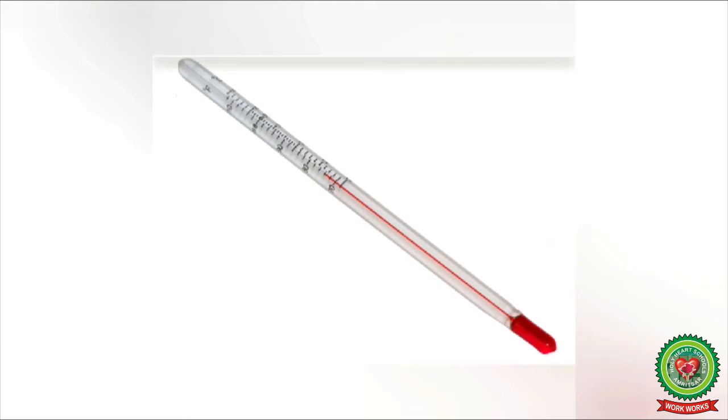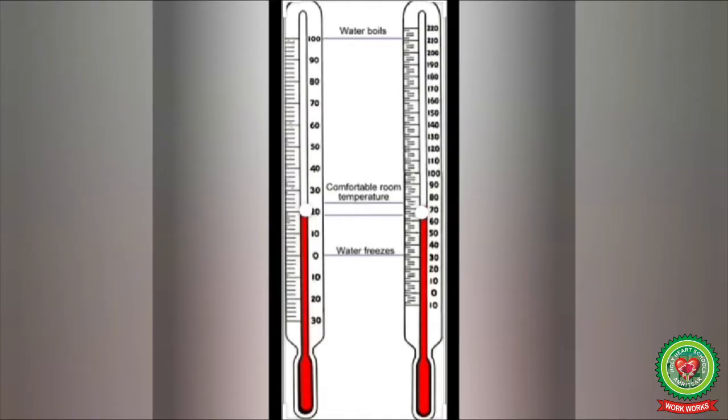We have two types of thermometers: the first is the Centigrade or Celsius scale thermometer, and the second is the Fahrenheit thermometer. The Celsius thermometer was developed by Anders Celsius in 1742, whereas the Fahrenheit scale was developed by Gabriel Fahrenheit in 1724.